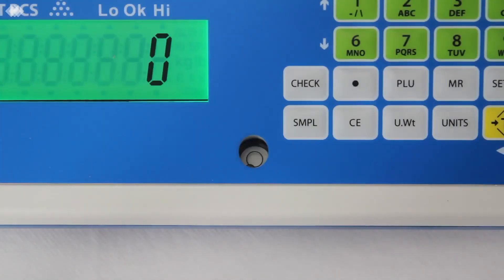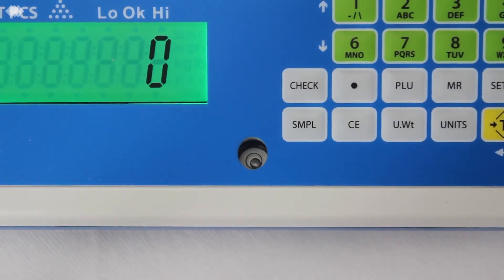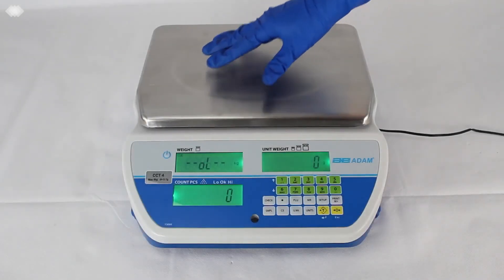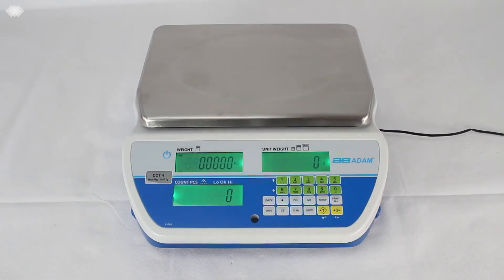To ensure optimum weighing results, the level indicator and non-slip adjustable feet ensure proper scale setup. Load cell protection helps prevent damage to internal components due to overloading.